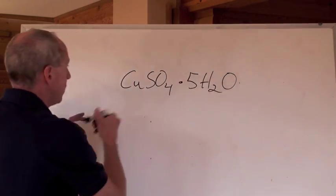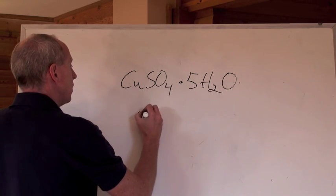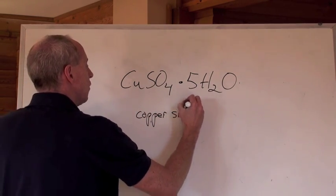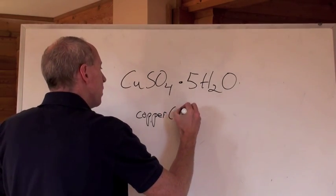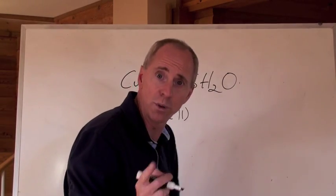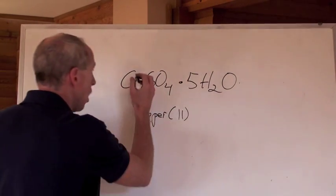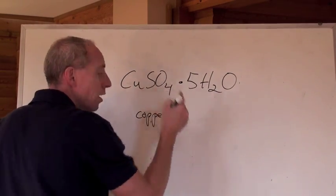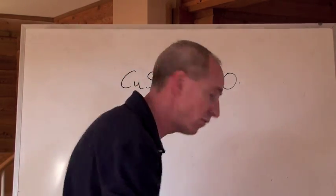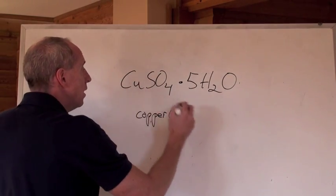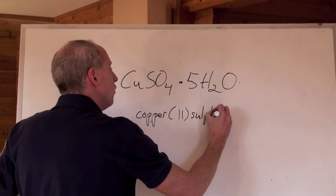This is copper(II) sulfate. Hey Ken, I just said copper sulfate, am I right? You are not right, because copper can have more than one charge - it's 2+ or 1+, and this happens to be the copper with the 2+. How do you know? Because SO4, sulfate, is a 2- charge. 2+, 2-, makes that formula. So it's copper(II) sulfate.